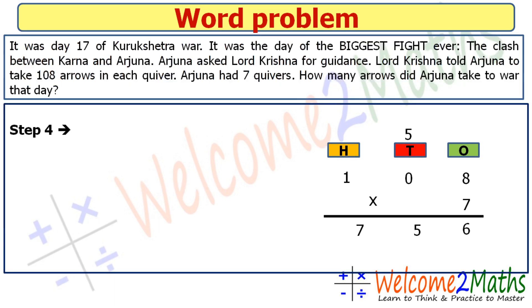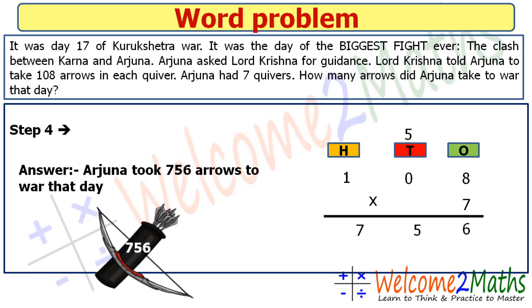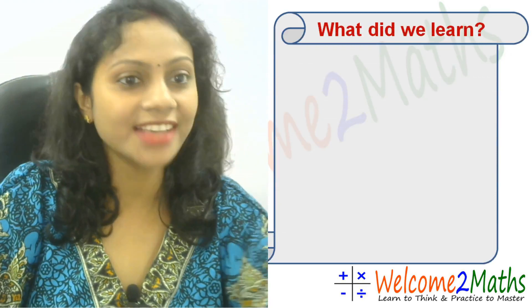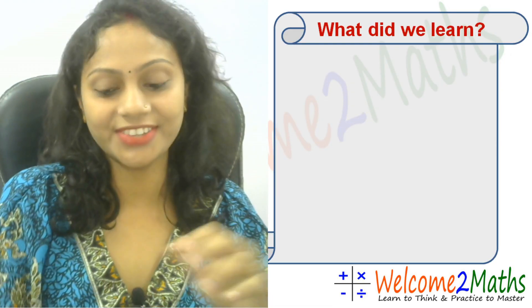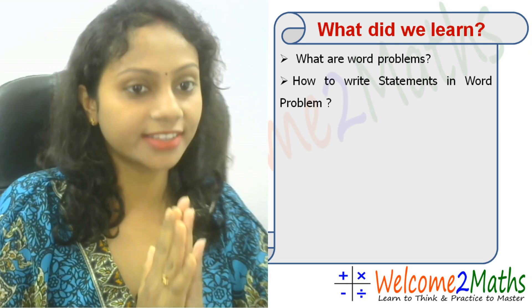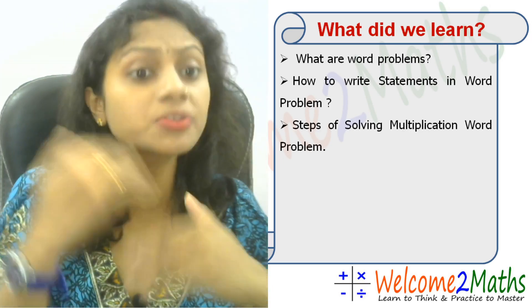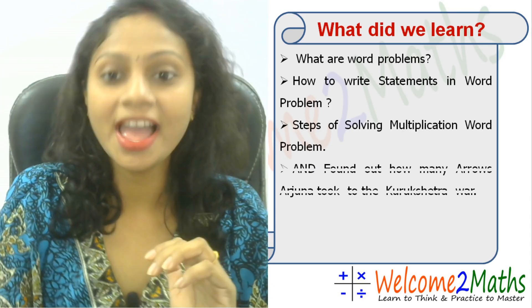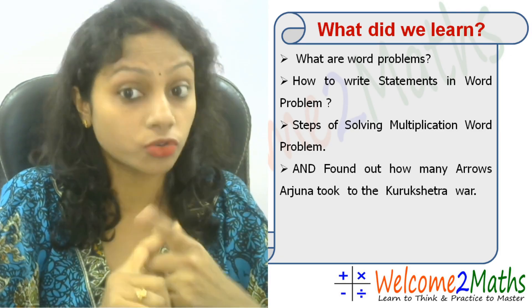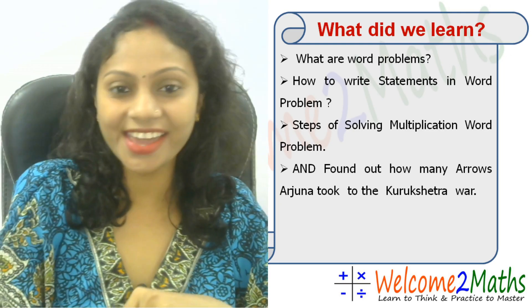The answer is: Arjuna took 756 arrows to war that day. So before the end of today's class, let's review what we learned. We learned what word problems are, how to write statements in a word problem, the steps for solving a multiplication word problem, and we found out how many arrows Arjuna took to the Kurukshetra war.